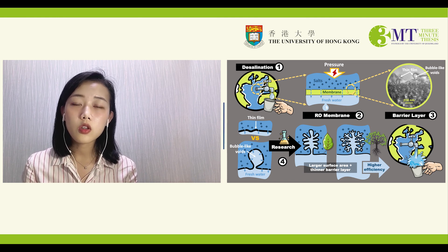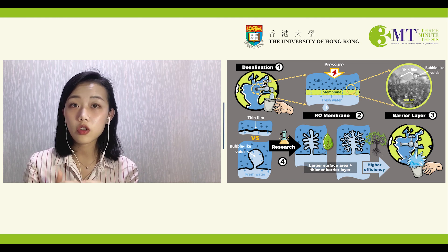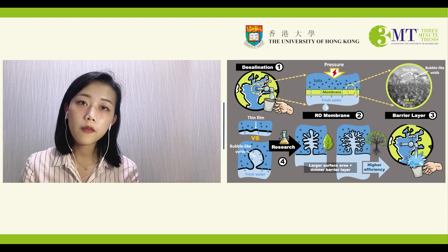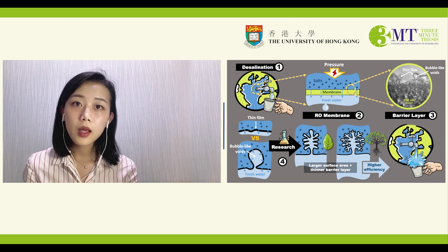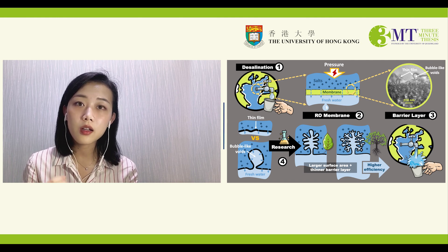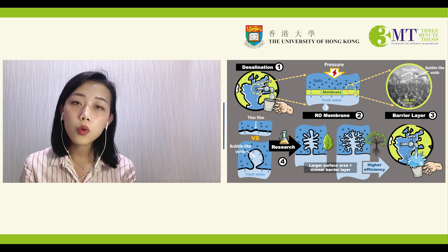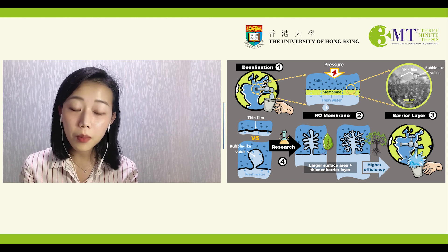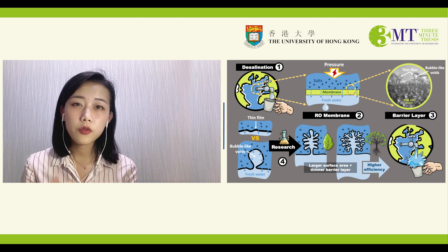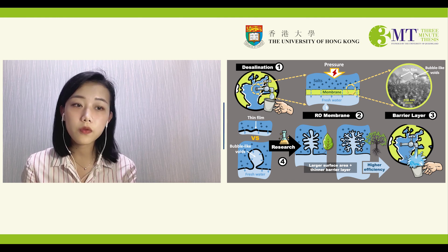My research is on the relationship between this structure and the filtration efficiency of the membrane. Based on this relationship, we can further design the layer structure to get a better membrane with high efficiency, which can produce more fresh water using the same energy and time. Imagine if there's a flat film without the voids underneath — the fresh water can only pass through the membrane within the limited surface area of this film.